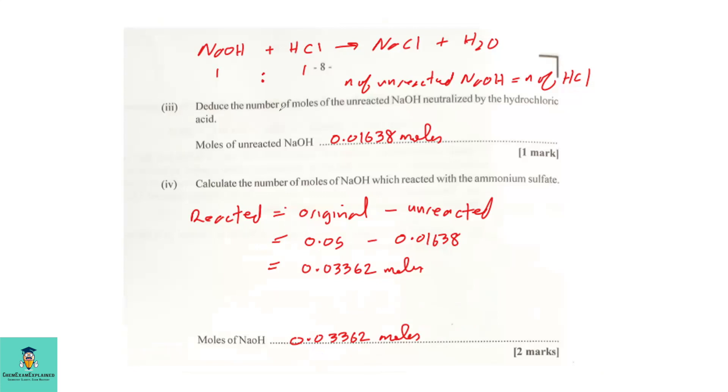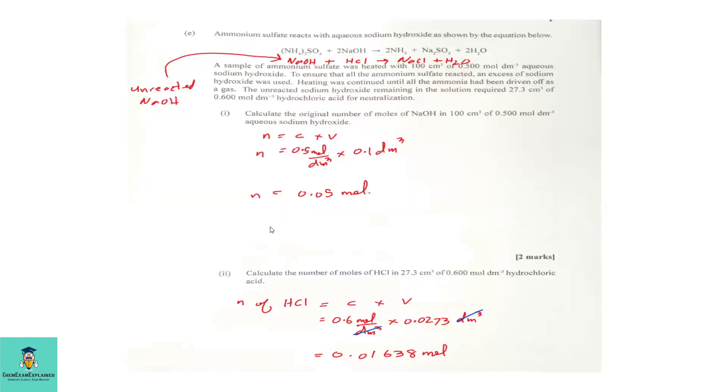Part 3. Deduce the number of moles of the unreacted sodium hydroxide neutralized by the hydrochloric acid. So the moles of unreacted sodium hydroxide neutralized by the hydrochloric acid is 0.01638 moles. Let's see why. If you recall, we calculated the number of moles of hydrochloric acid. So this would be the moles of hydrochloric acid that reacted with the excess sodium hydroxide that was left after the reaction of the ammonium sulfate with the excess sodium hydroxide.